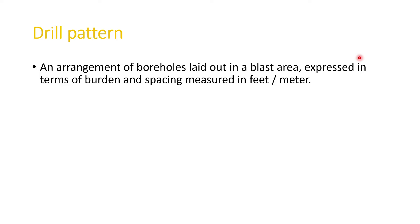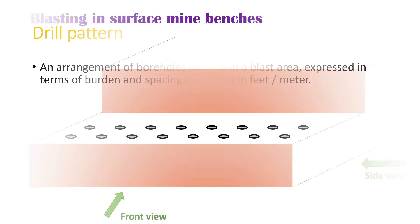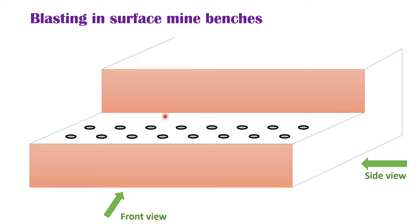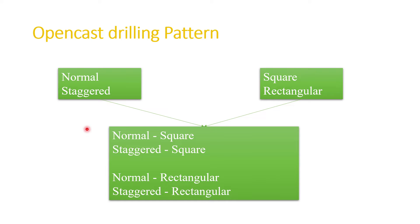In the last class, we discussed the drill pattern. So what is the drill pattern? An arrangement of boreholes laid out in a blast area, expressed in terms of burden and spacing measurement. The arrangement of these boreholes is called the drilling pattern. There are four types: normal square, staggered square, normal rectangular, and staggered rectangular.